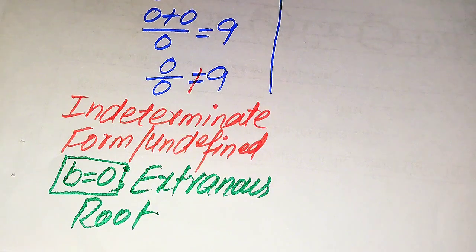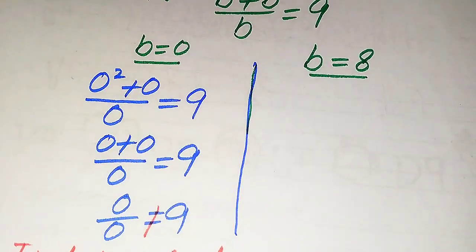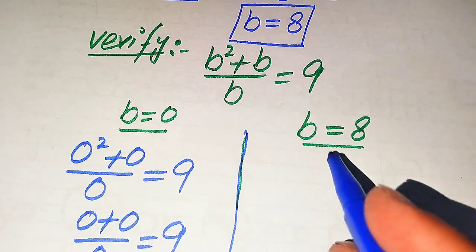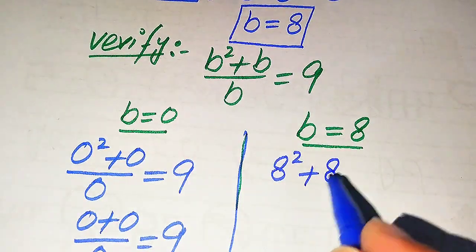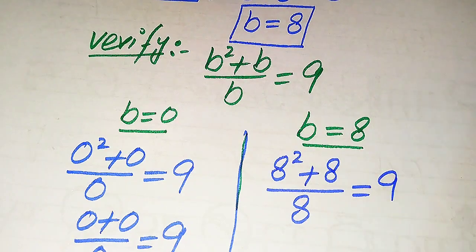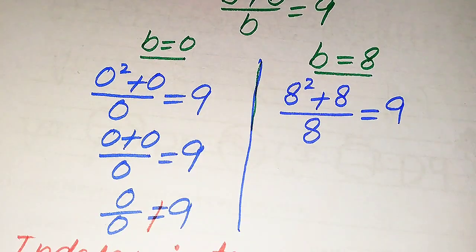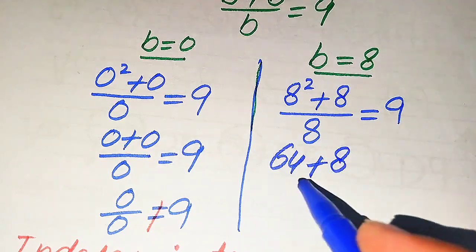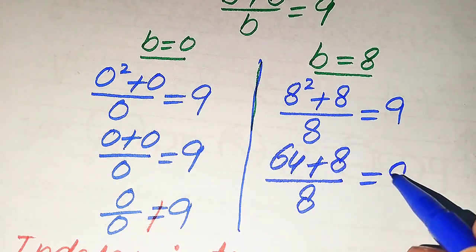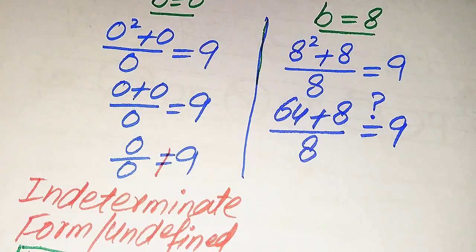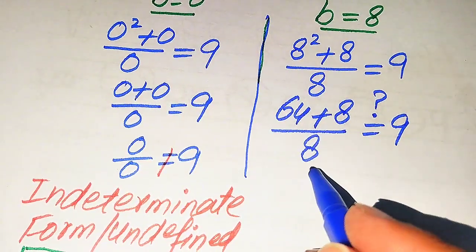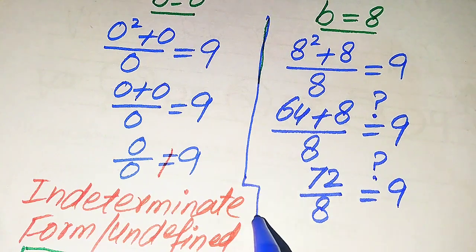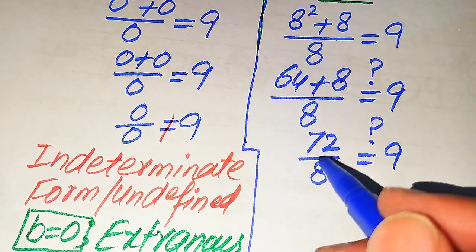Now we verify the second root, b equals 8. We substitute b equals 8 into the left-hand side: 8 squared plus 8 divided by 8 equals 9. Here, 8 squared becomes 64, so we get 64 plus 8 divided by 8 equals 9. Then 64 plus 8 becomes 72, so we check whether 72 divided by 8 equals 9.